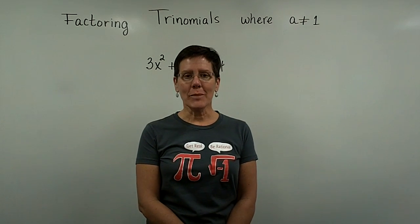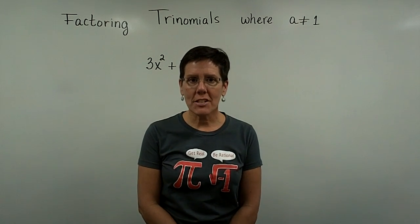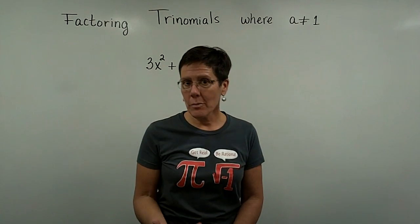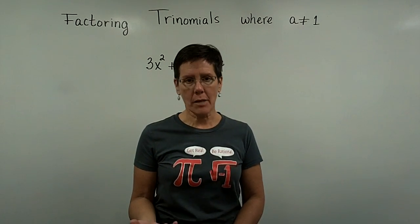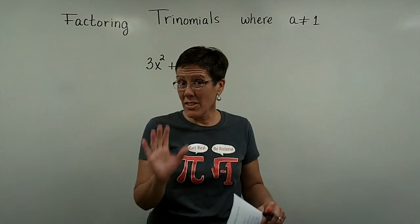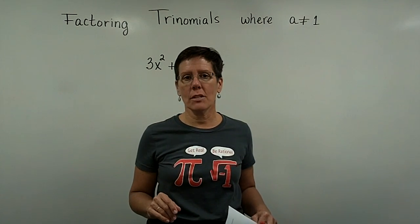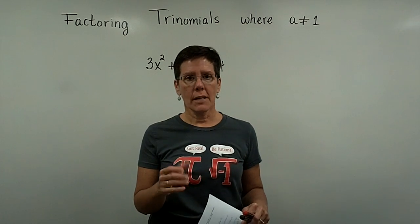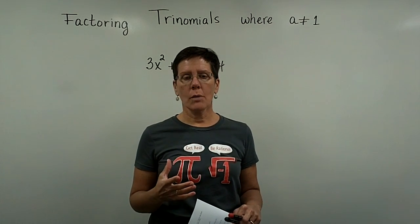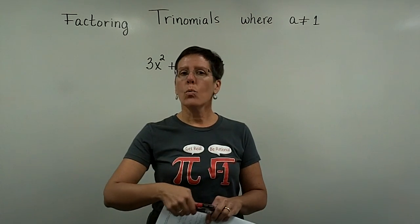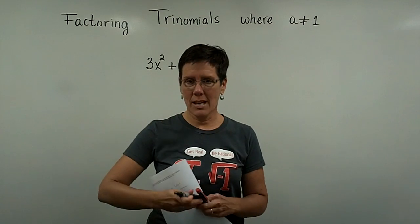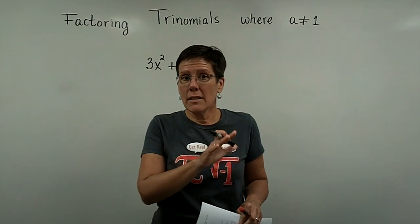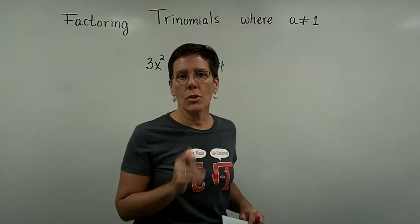Let's continue to factor trinomials where the coefficient in front of the x squared term is not a 1. While many people will use that guess and check process, only about 20 to 25% of folks are really good at their factoring times tables and can just see where the values should go. This AC method works all the time, every time, if the trinomial is factorable — so you can be guaranteed that the process will get you to the right answer.